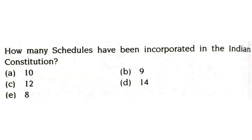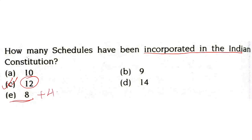How many schedules have been incorporated in the Indian constitution? As of now, there are 12 schedules in the Indian constitution. It originally had 8 schedules, and later 4 more have been incorporated. So the right answer is 12 — the Indian constitution consists of 12 schedules as of now.